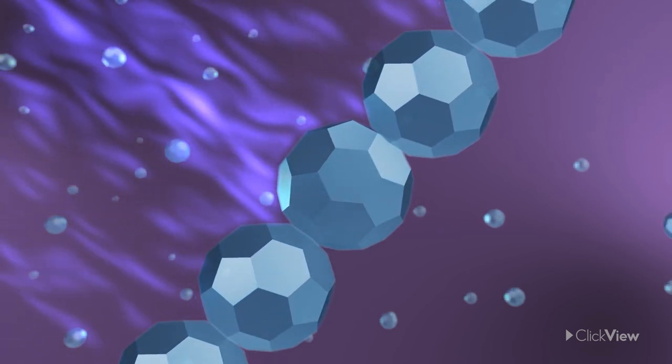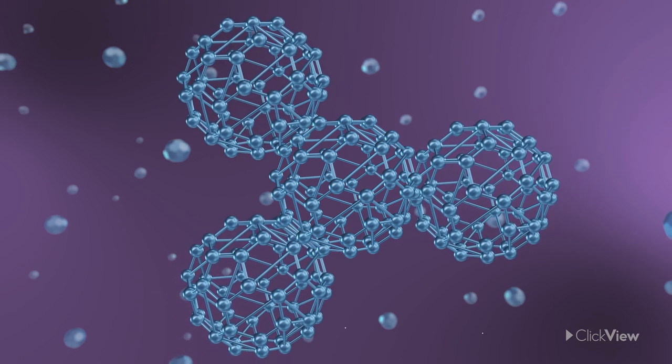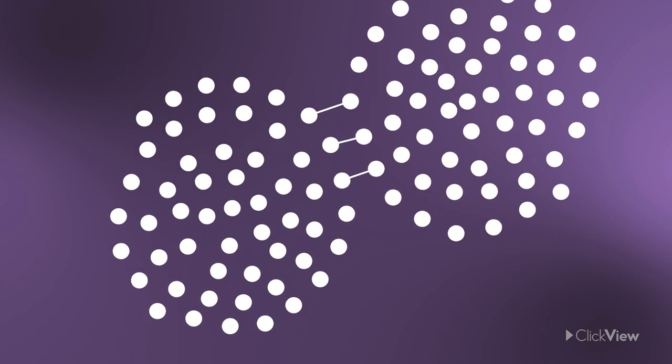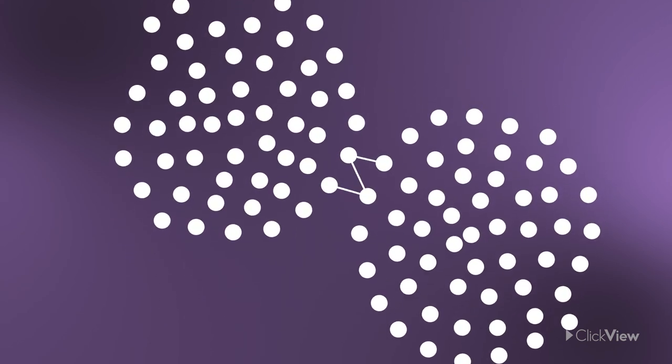Chemicals can combine together in reactions far more easily when their atoms and molecules can come into contact. Think of it like a crowd of people shaking hands. In a large crowd, those in the middle would need to wait some time for their turn.